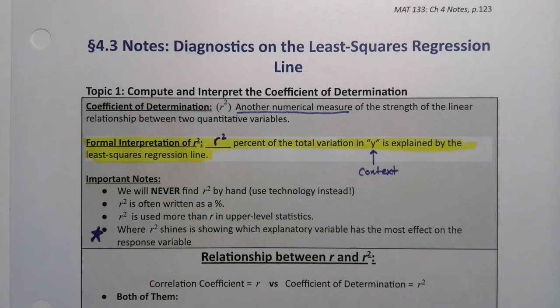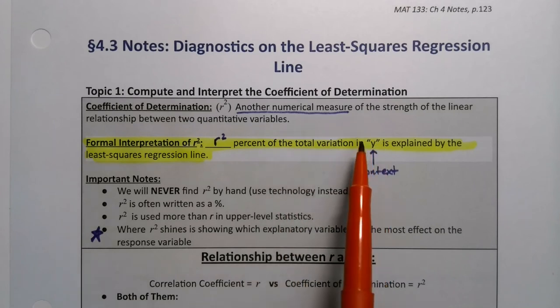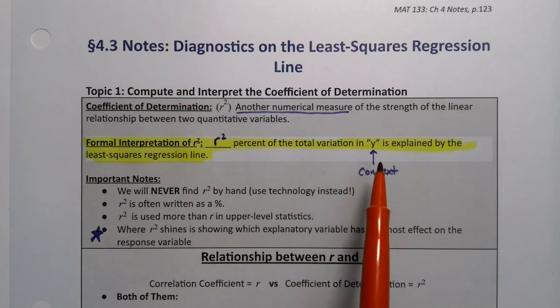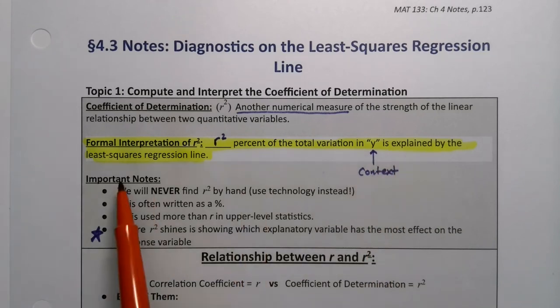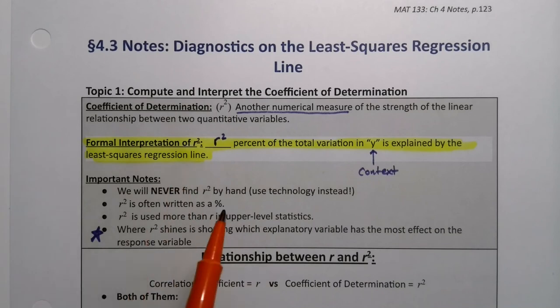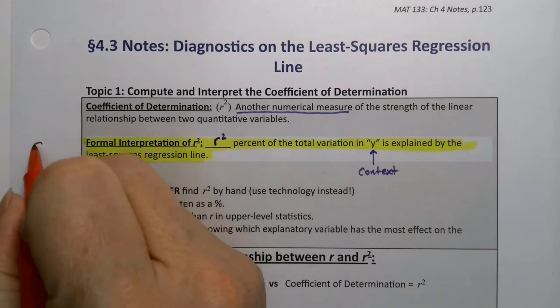Now, the way that we interpret r squared is a very formal script that you follow pretty much to the letter. Sometimes with the slope script, for example, we can play around with that a little bit and still get the meaning across in a precise way. This particular interpretation we will follow exactly. So you take your r squared and you write it as a percent. So you'll say r squared percent of the total variation in y, whatever your variable y is, explain it with context. And then you'll say is explained by the least squares regression line. Period. That's it. That is what you will write.